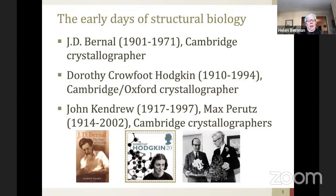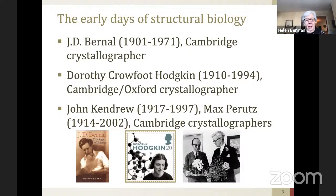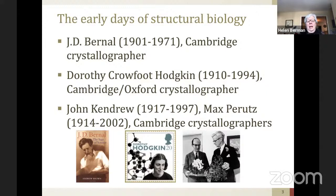One of Bernal's students was Dorothy Crowfoot Hodgkin, who was in Cambridge and was the first person to crystallize a protein and get an X-ray diffraction pattern. She then went on to Oxford, where she ran a lab, and of course she won a Nobel Prize for her brilliant discoveries. John Kendrew and Max Perutz, also in Cambridge, were crystallographers who did the first structure of myoglobin and then hemoglobin in the 50s — this was the beginning of the whole work in structural biology.